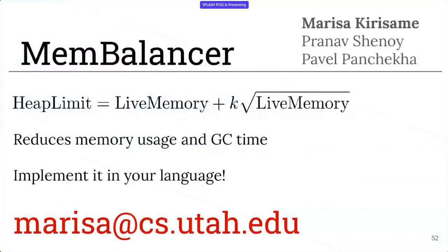Okay, so that is MemBalancer. It sets heap limit to be live memory plus extra memory proportional to the square root of live memory, not proportional to live memory, that is wrong. If you do that, it will reduce memory consumption and garbage collection time. Come talk to me to get this implemented in your language. Thank you. Any questions?